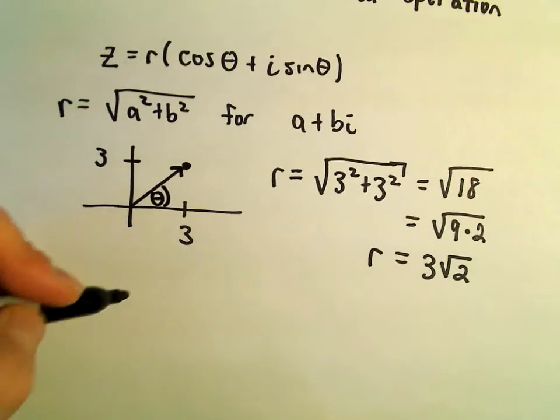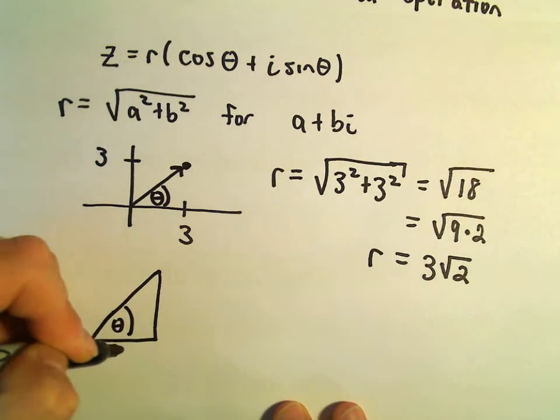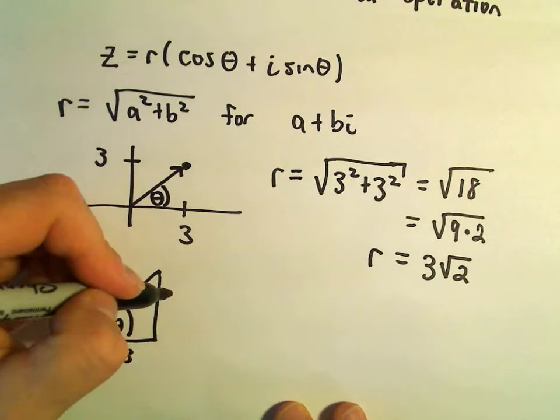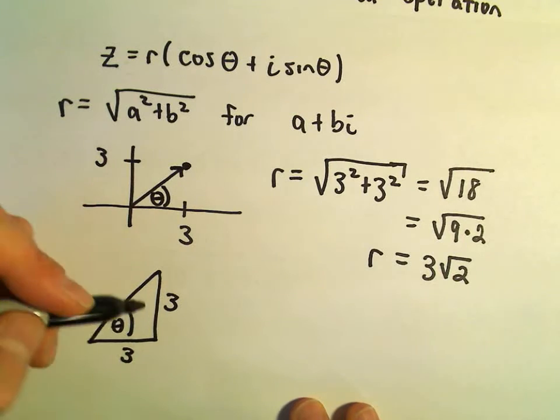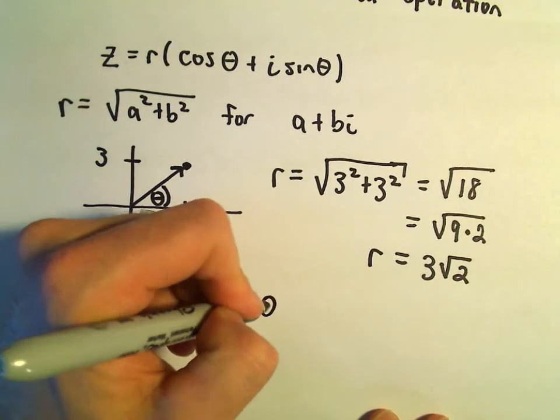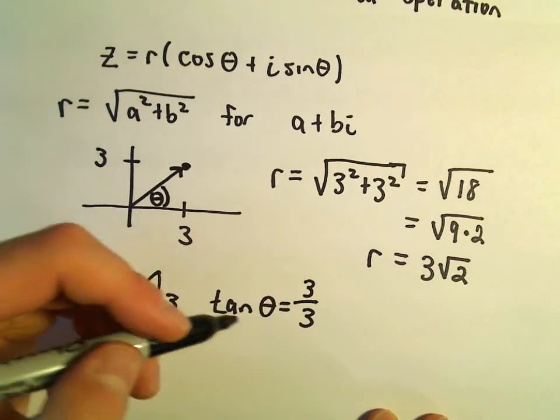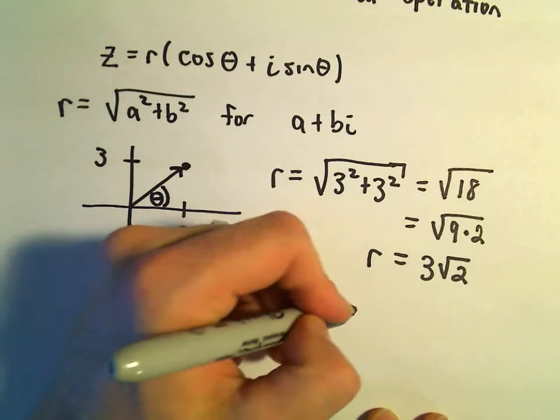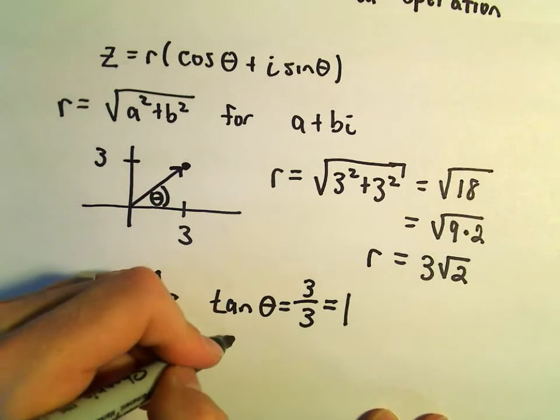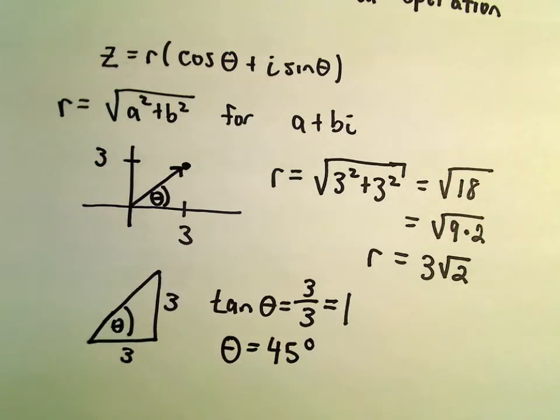To figure out our value for theta here, we just think about making a little right triangle. Well, the adjacent side is length 3, the height is also length 3, the opposite side. So tangent of theta would just be the opposite over the adjacent, or 3 over 3, which gives us 1. And tangent of 45 degrees is going to equal 1.